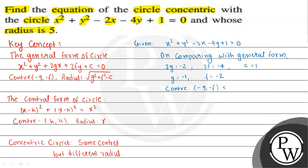So the center values are h = 1 and k = 2. The new circle will have the same center but its radius will be 5. Using the central form of the circle with these values: